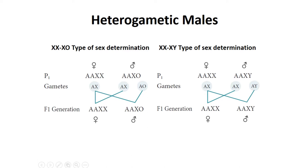In XY type sex determination, females are homogametic and males are heterogametic. The female produces only one type of egg, while the male produces two types of sperm — one carrying the X chromosome and one carrying the Y chromosome. When the X-carrying sperm fertilizes the egg, it develops into a female; when the Y-carrying sperm fertilizes the egg, it develops into a male. So here, the sperm determines the sex.